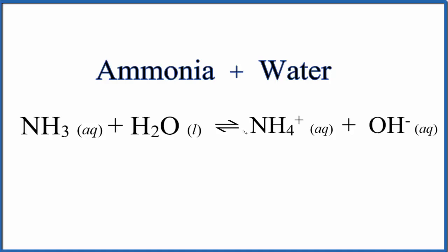Think of the equilibrium symbol as two arrows: one points towards the products, one towards the reactants. The ammonia combines with water to form ammonium hydroxide. We have our ammonium ion and our hydroxide ion.